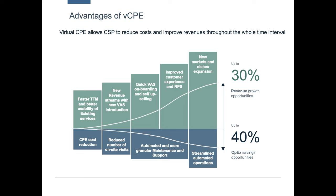Hardware-based customer premise equipment deployed at customer locations has a higher touchpoint, is costly from a support and maintenance standpoint, and is slow from a time-to-market perspective. The advantage of virtual CPE has really two major dimensions: one is around revenue growth opportunity — time-to-market, adding new value-added services, quick onboarding, upselling, cross-selling, and improving net promoter score — and the other is major OPEX benefits, which go into cost reduction based on fewer truck rolls, more automated and granular maintenance, and streamlined operations. When looking at our customer base and the initiatives that NEC NetCracker is involved in, enterprise market is a big focus and virtual CPE seems to be the low-hanging fruit.